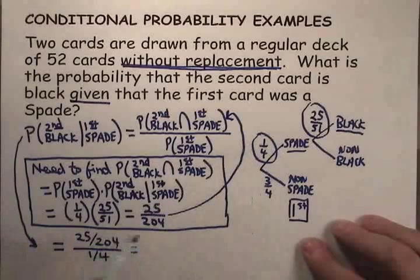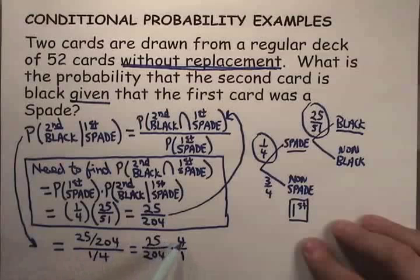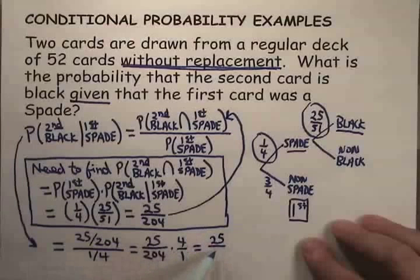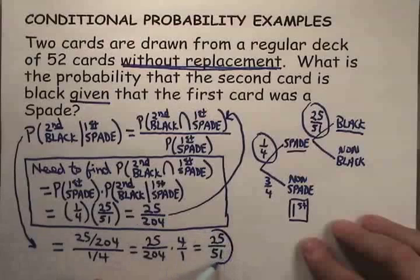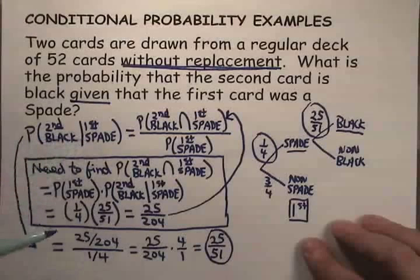So that's 25 over 204, invert and multiply, times 4 over 1. Four goes into 204 fifty-one times, so we end up with 25 over 51. The probability of the second one being black given that the first one is a spade is 25 over 51.